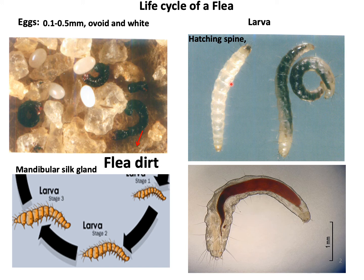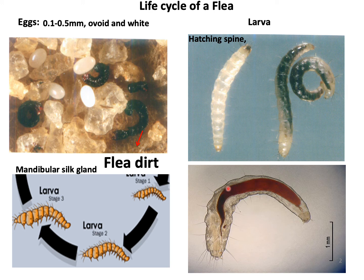The larvae possess a well-developed head capsule and chewing mandibles. They also possess a mandibular silk gland, with which they produce silk to form a cocoon. Most larvae feed on organic matter in the nest or bedding materials of their host, or on the feces of the adult flea — also known as flea dirt. This picture shows the larva feeding on different organic material or flea dirt.